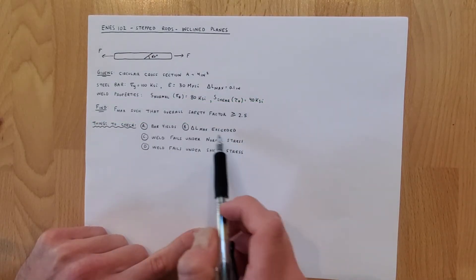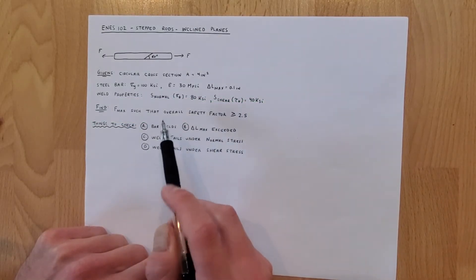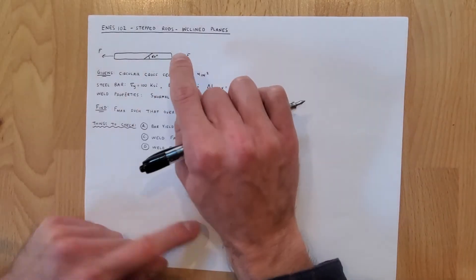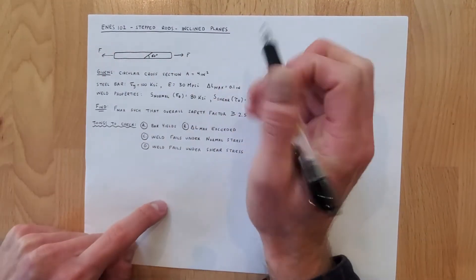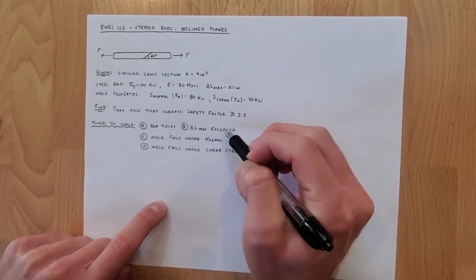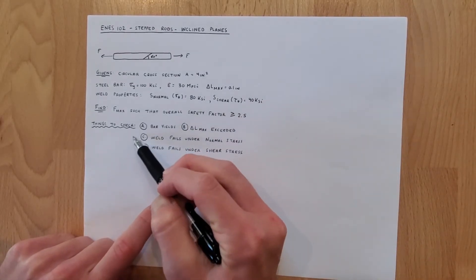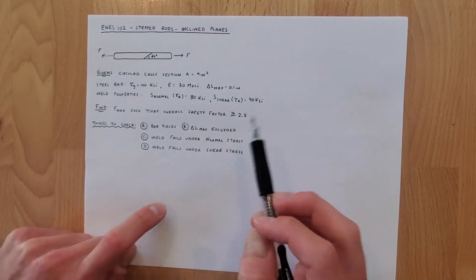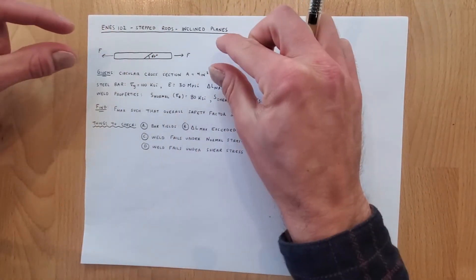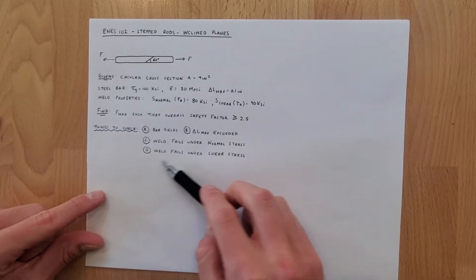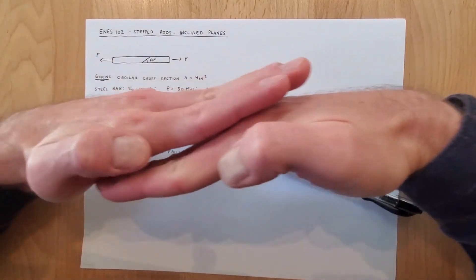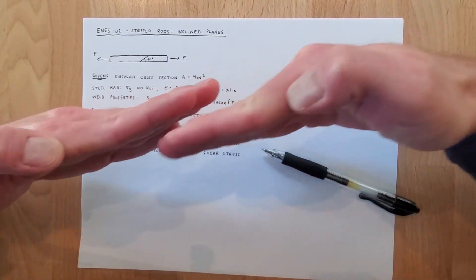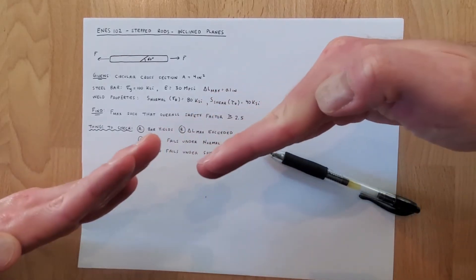So the four things that we need to check in this problem here are that the bar yields just in normal pooling. We also need to check this change in length constraint, and then we need to check the two constraints relative to the weld which is that the weld could fail under normal stress and just be pulled apart or that the weld could fail under shear stress which is when the shear kind of splits the weld this way.